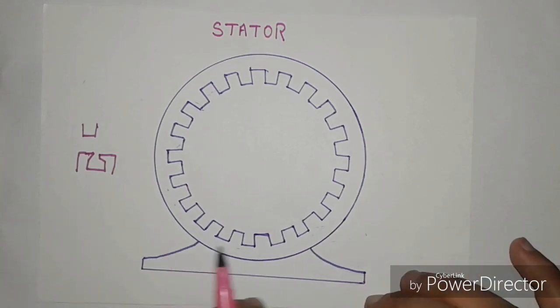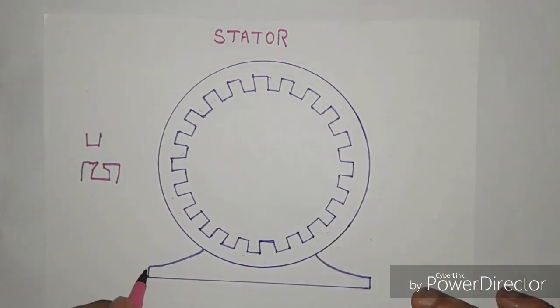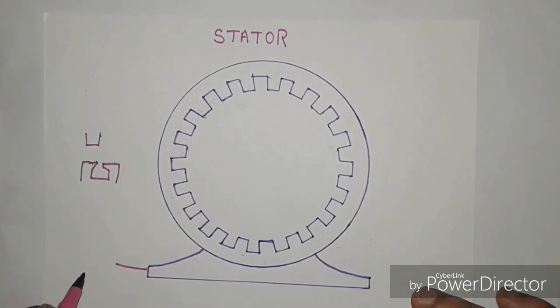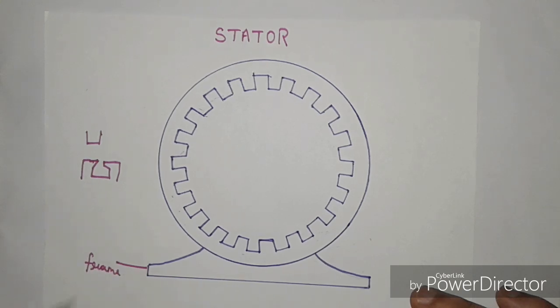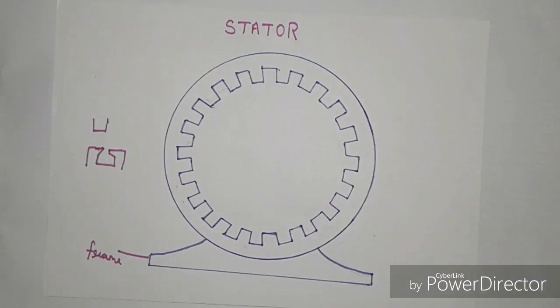Next is rotor. Rotor is a rotating part of the machine, that is why it is called rotor. The rotors are of two types: salient pole rotor and non-salient pole rotor. First, we will see salient pole rotor.